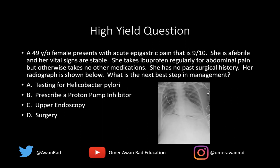This is a 49-year-old female that presents with acute epigastric pain rated as 9 out of 10. She is afebrile and her vital signs are stable. She takes ibuprofen regularly for abdominal pain, but otherwise takes no other medications. She has no past surgical history. Her radiograph is shown below. What's the next best step in management? Is it testing for Helicobacter pylori, prescribe a proton pump inhibitor, upper endoscopy, or surgery? I promise we'll come back to this question at the very end.